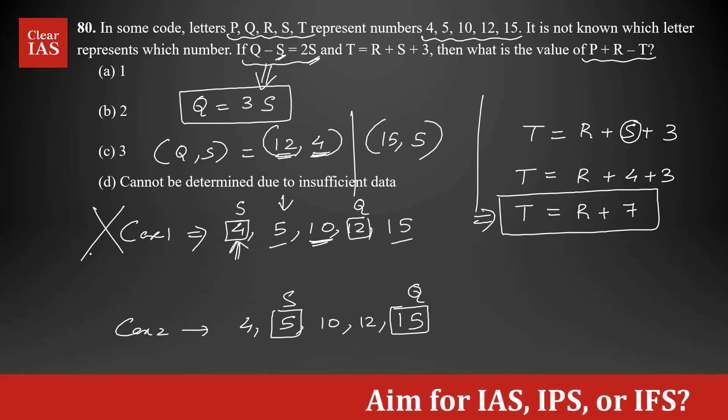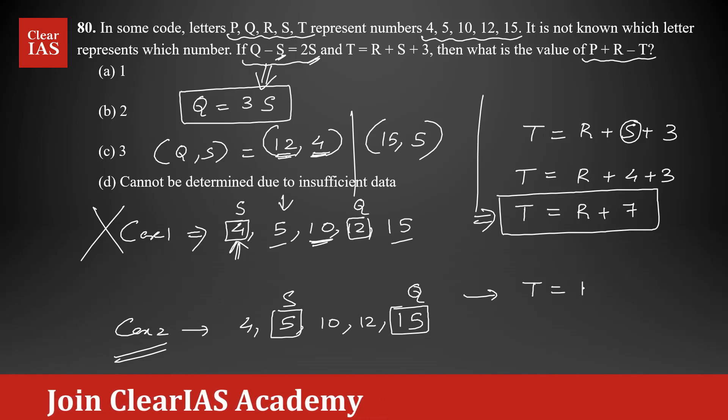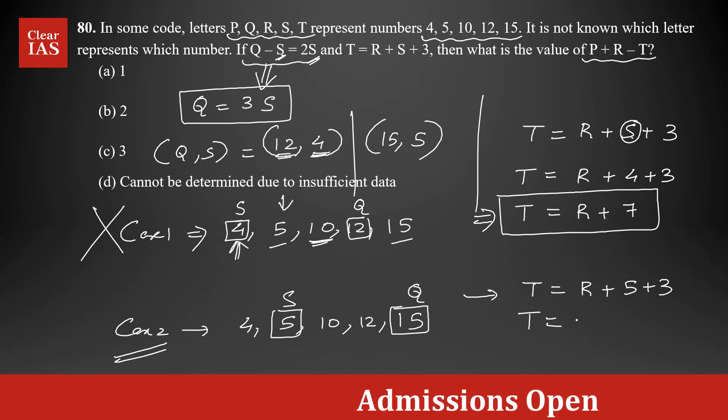So that means case 2 has to be the only condition possible. We can confirm that value of S is 5 and value of Q is 15. We can confirm that part. So I'm going to use case 2 in this equation. T is equal to R plus, instead of S, I'm replacing it by 5. 5 plus 3. So T is equal to R plus 8.